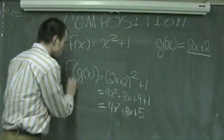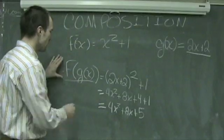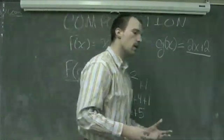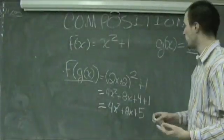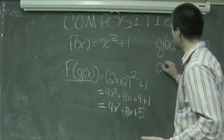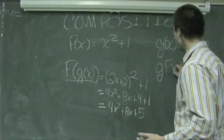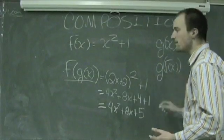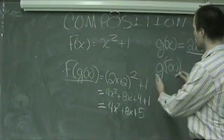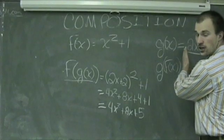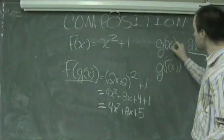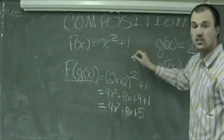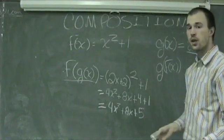This composition is different and unique from a different composition that we can make, which is g of f of x. g of f of x is now going to be this function g of x, and yet every time we see x, we'll now insert the quantity x squared plus 1.